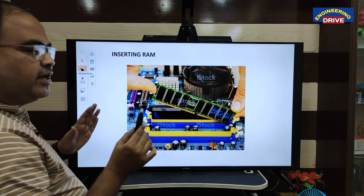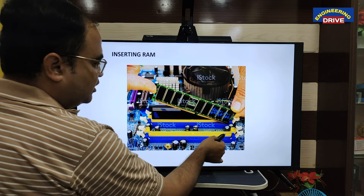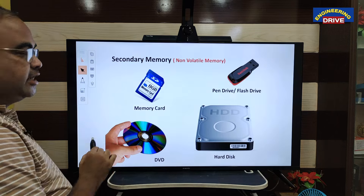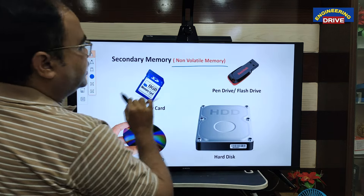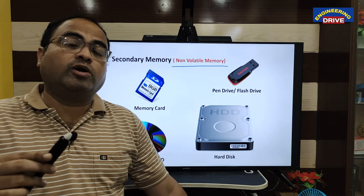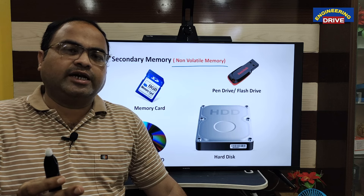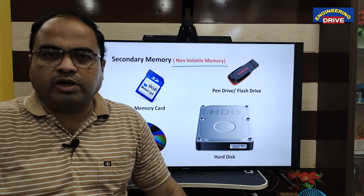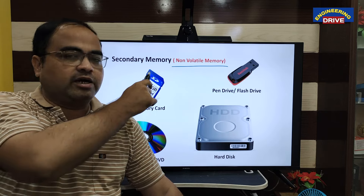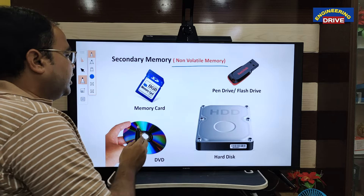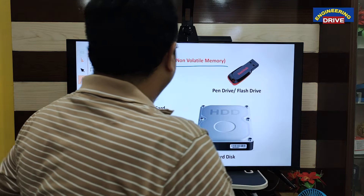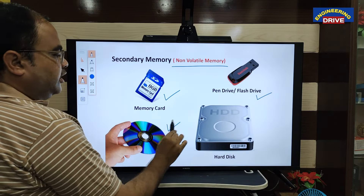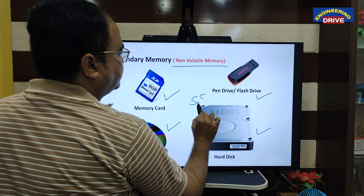RAM is inserted into slots available on the motherboard. For secondary memory, there is one important word: it is a non-volatile memory. Non-volatile means permanent — once the data is stored in secondary memory, it will remain for a long period of time until the user manually deletes the data. Even if you turn off the computer, the data will not get erased from secondary memory. Examples of non-volatile memory include memory cards, flash drives, pen drives, DVDs, hard disks, and SSDs.